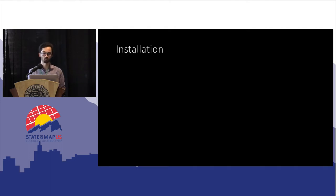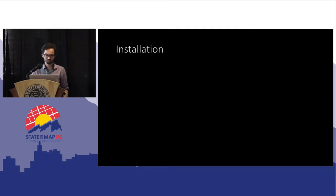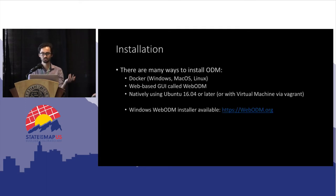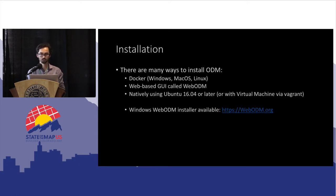Then you use photogrammetry software — obviously I'm going to say you should use Open DroneMap, because it's open source and I built it. There are three main ways to install it. If you understand Docker, that's the easiest method — we have a Docker Hub, so you just pull the image and run Open DroneMap, and it works cross-platform. We also, as of this past year, have a web interface called WebODM — a deployable server you can run locally or build your own service. You can also install it natively on Ubuntu.